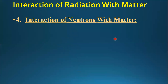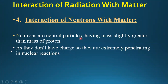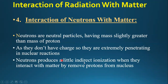The fourth interaction is the interaction of neutrons with matter. Neutrons are neutral particles having a mass slightly greater than that of the proton. Because they carry no charge, they do not experience electrostatic attraction or repulsion, making them extremely penetrating. This makes neutrons a very effective tool for initiating nuclear reactions. Neutrons produce only very little direct ionization when they interact with matter.